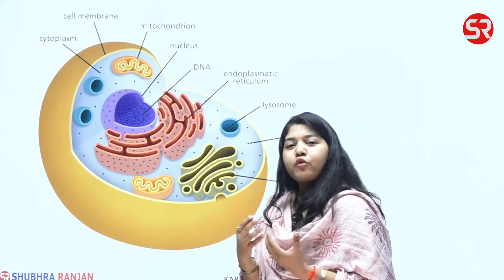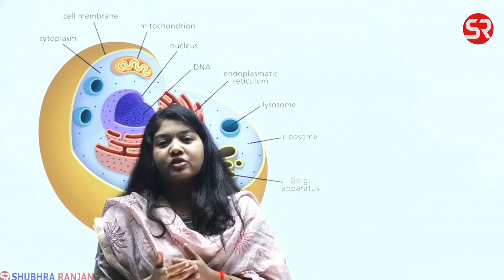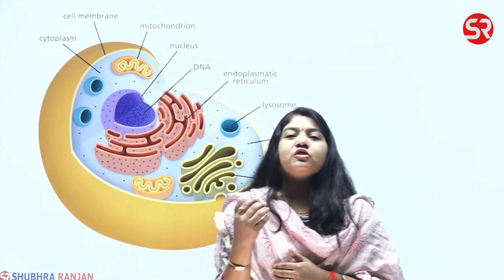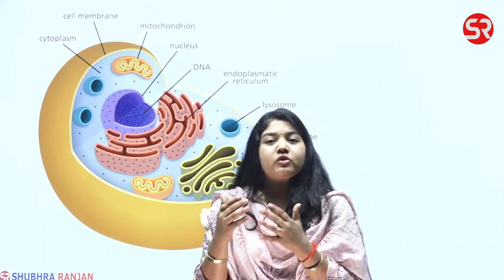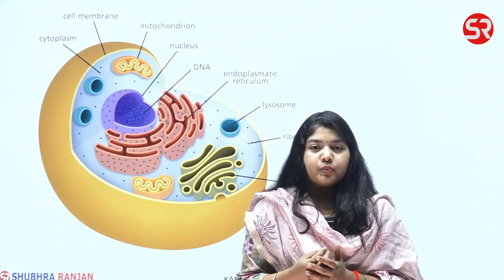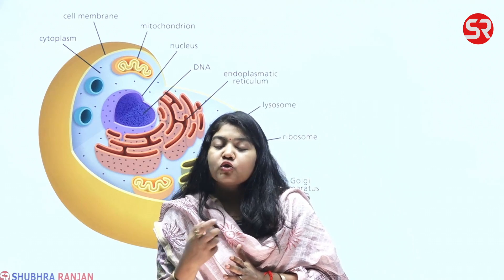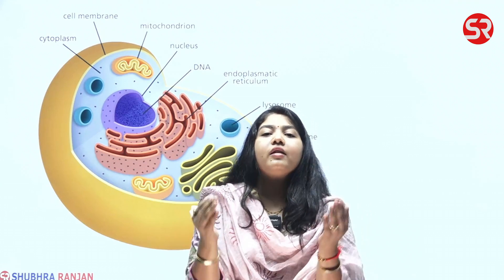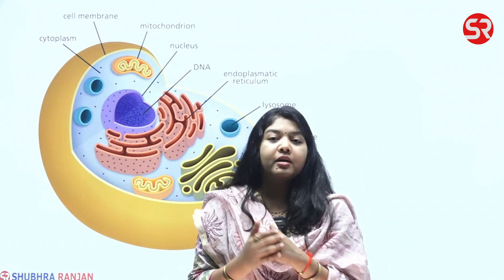If I ask what is the difference between a virus and any other microorganism, the first thing that should come to mind is that viruses need a host body in order to survive and replicate. Why? Because of the absence of a cell membrane, also called the plasma membrane. Within the cell, the outer layer is called the cell membrane or plasma membrane, which is present in both plant and animal cells.